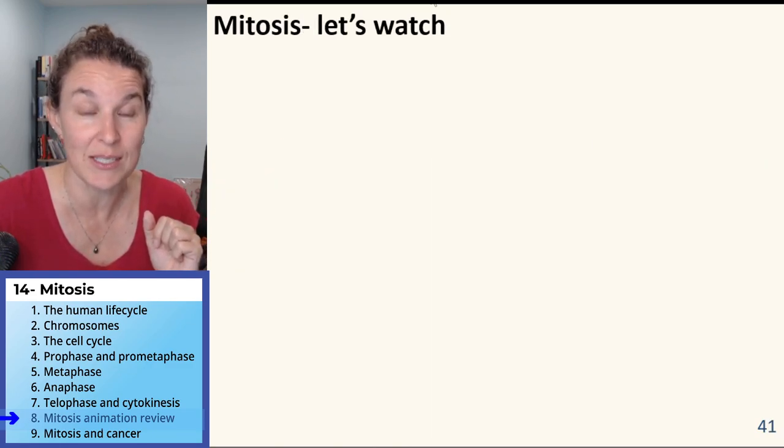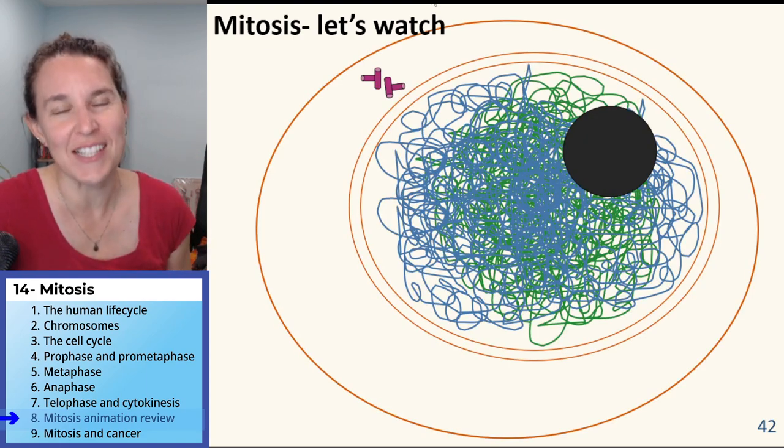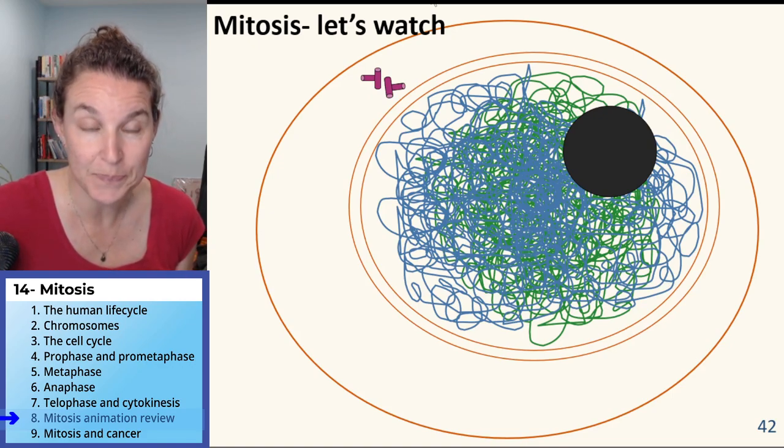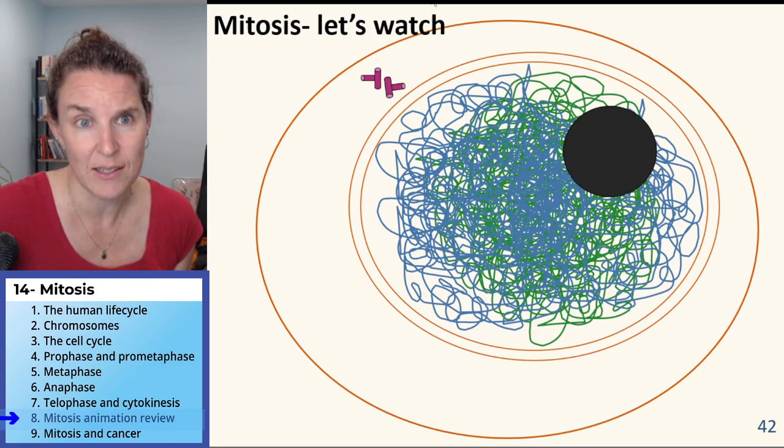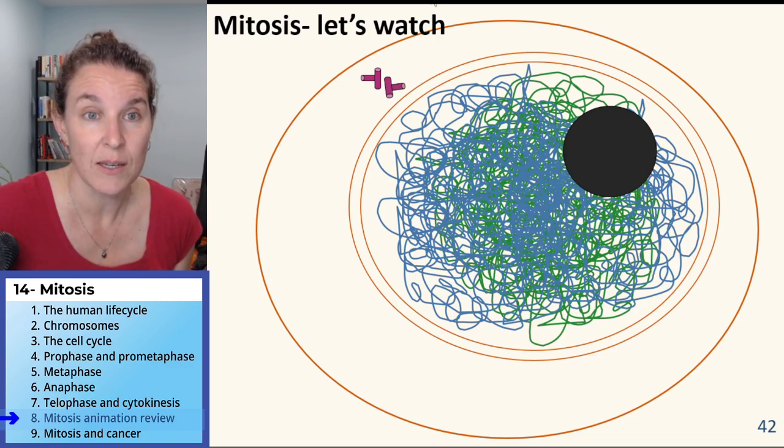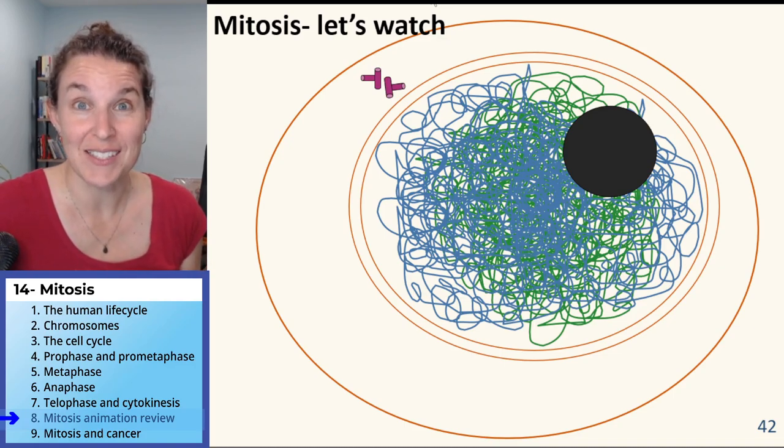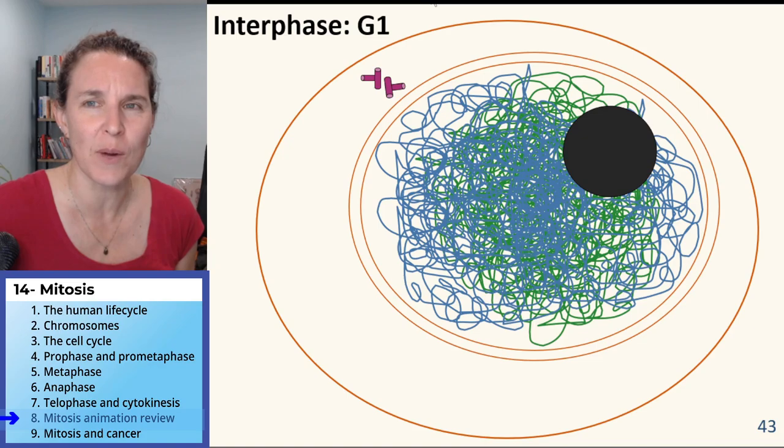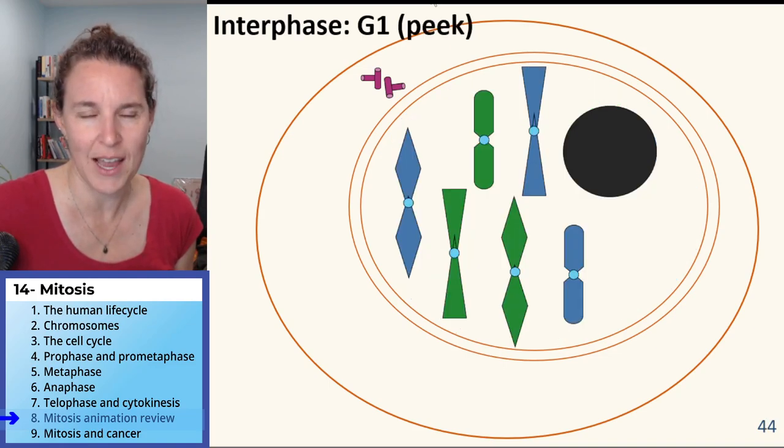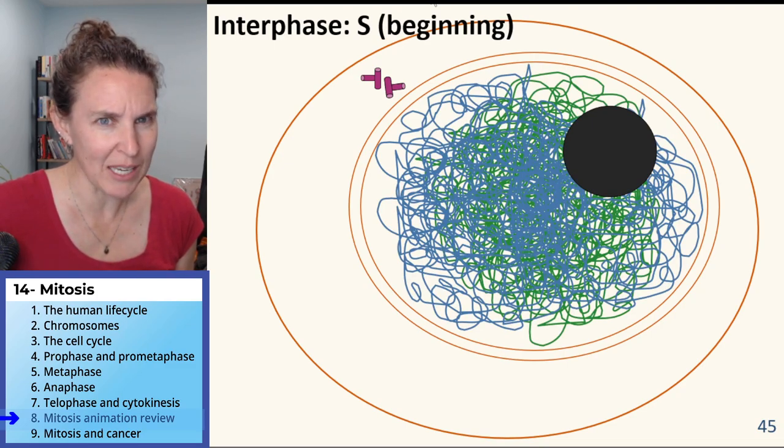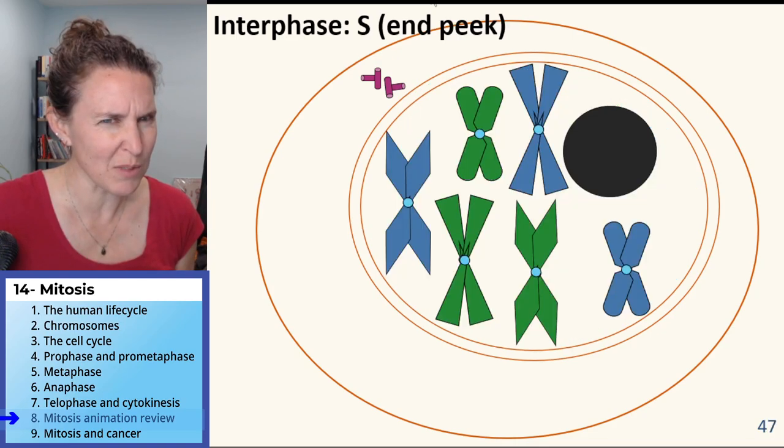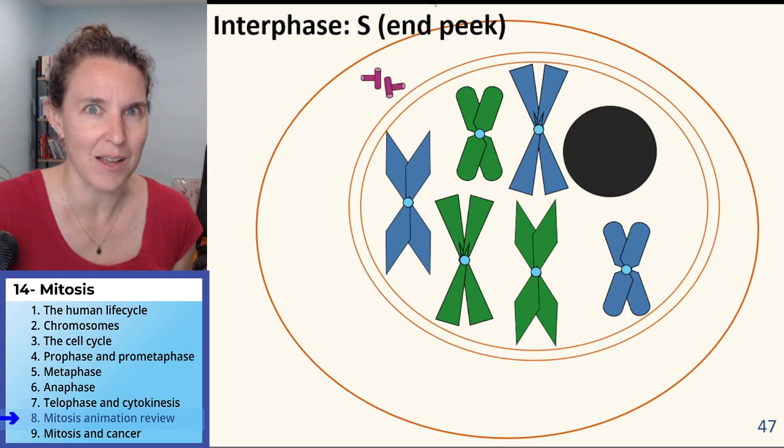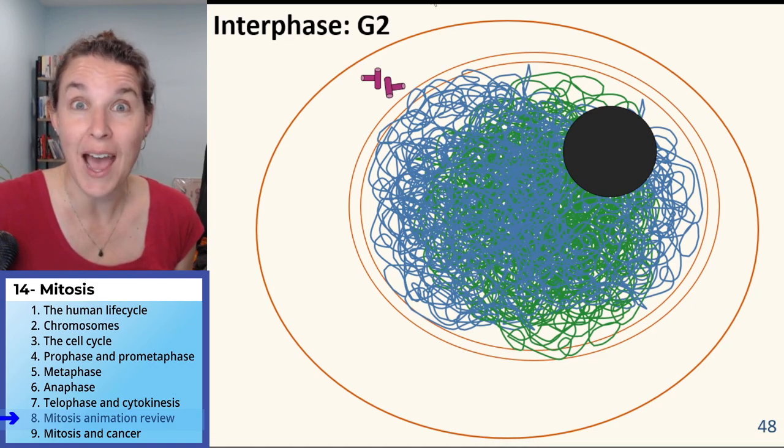Shall we see what happens in mitosis? Let's watch. We have a cell. Do you see my nuclear envelope? Do you see my centrioles and the nucleolus? We see all the parts and you see the chromatin. So we're about to start mitosis. What's the first stage of mitosis? Prophase. Why do we have to do interphase? We just did interphase. All right. Fine. We'll do interphase first. G1, S at the beginning, S in the end, G2. Now we're going to go into prophase.